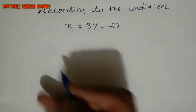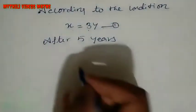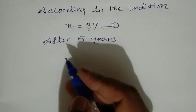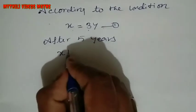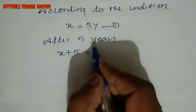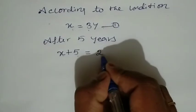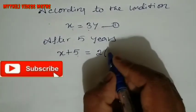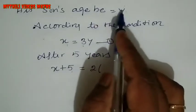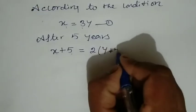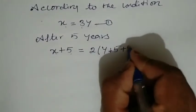Next condition: after 5 years. After 5 years, Raman's age is X plus 5. The sum of the sons' ages after 5 years — each son adds 5 years, so the combined sum increases by 10 — that is Y plus 5 for each son, giving Y plus 10 total. So X plus 5 equals 2 into (Y plus 5).